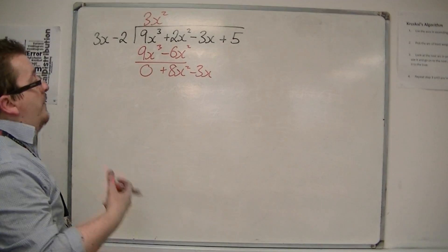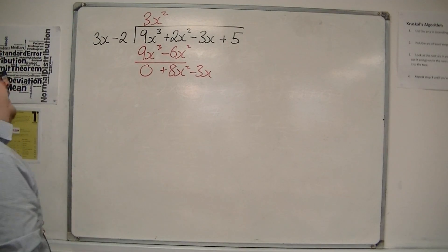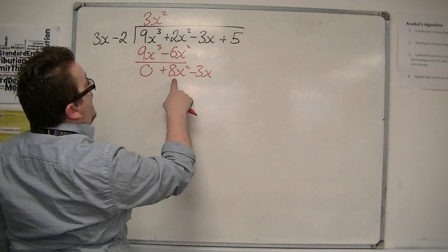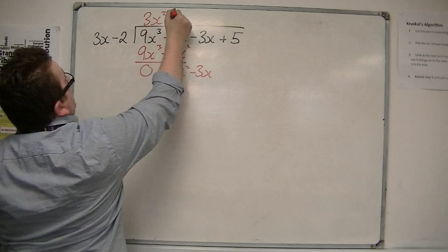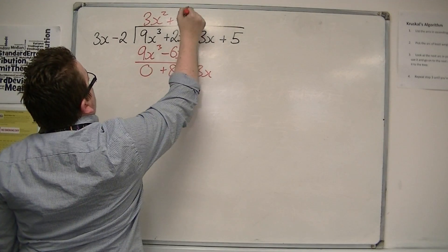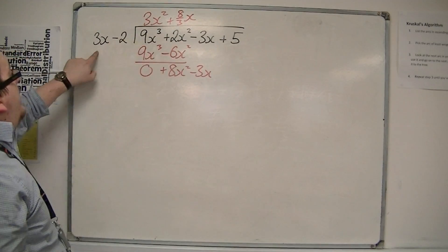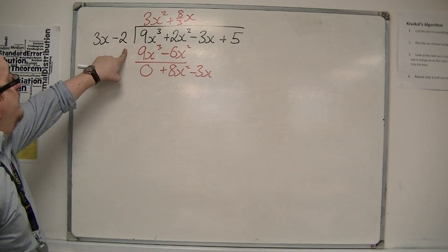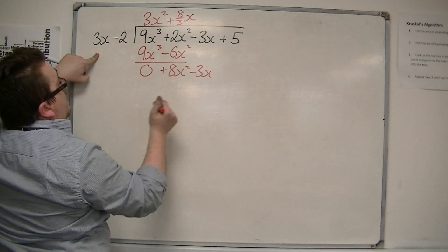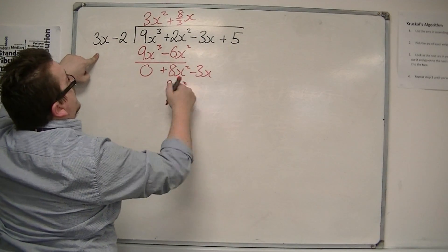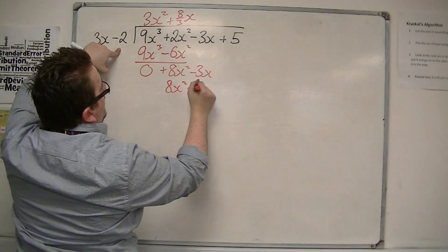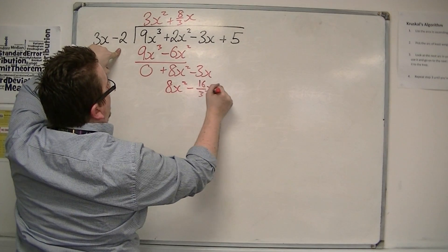Right, well this is where fractions start to come in. 3x into 8x squared, so 8x squared divided by 3x is 8 thirds x. Then I multiply the 8 thirds x by both of those two terms, so 8 thirds x times 3x is 8x squared. 8 thirds x times minus 2 is minus 16 thirds x.